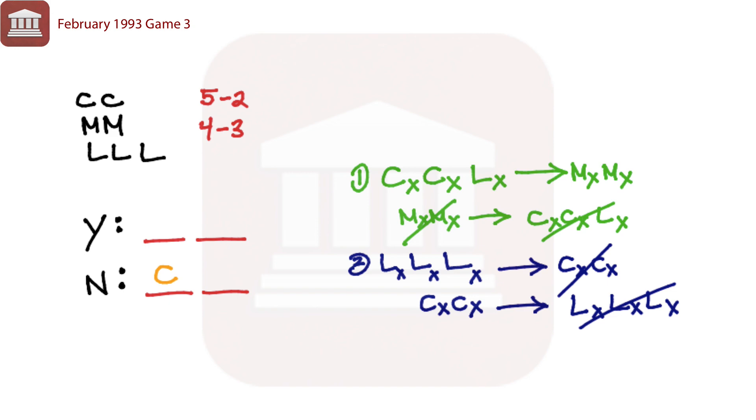So notice from the second condition that if three liberals vote the same way, then no conservatives vote that same way. So if we had three liberals voting no, we couldn't have any conservatives voting no. But the fourth condition told us that a conservative is voting no. So that tells us we cannot have all three liberals voting no, which means at least one liberal must also vote yes. And that would be the setup for this game.